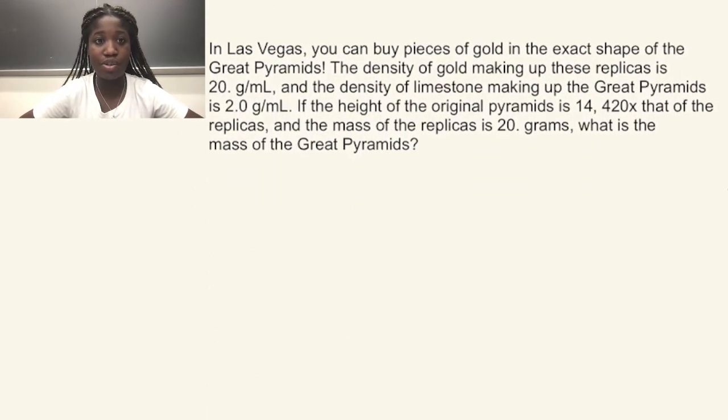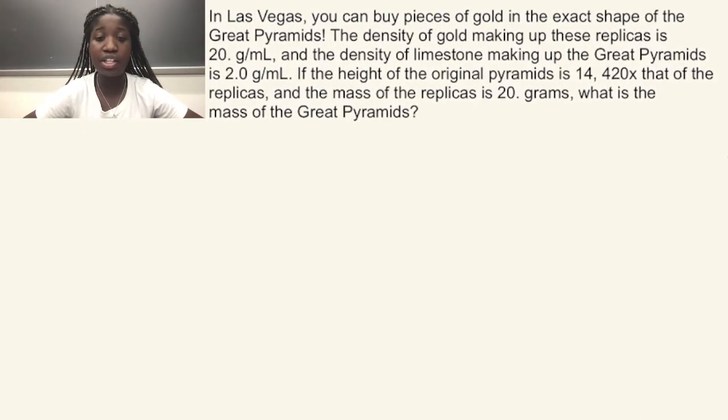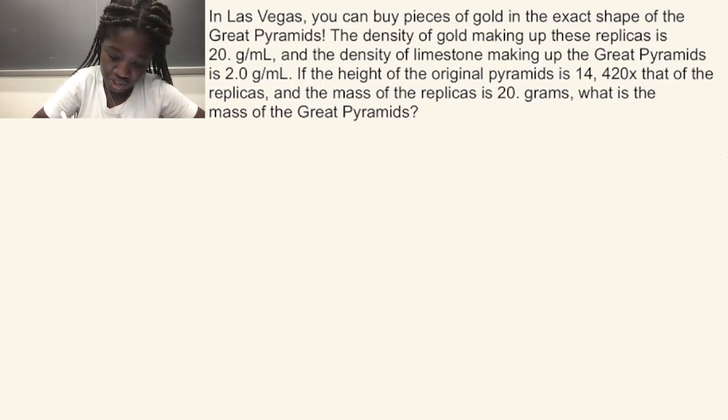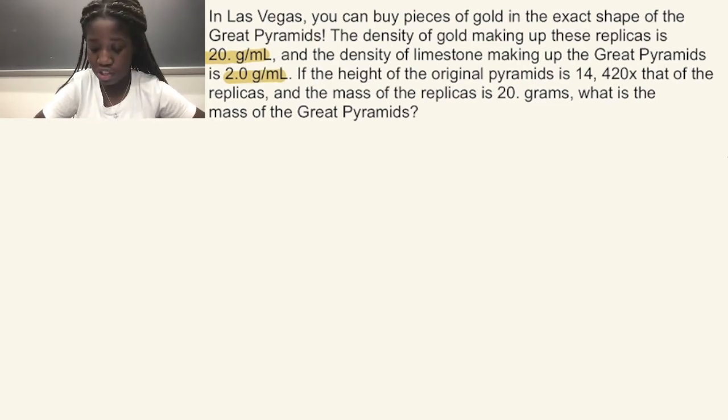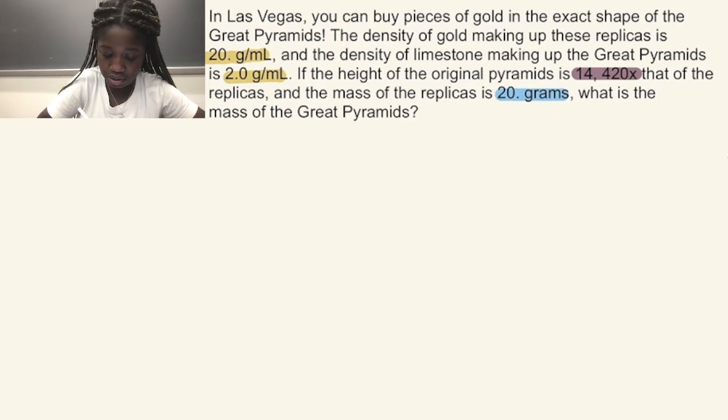This is the problem found in your pre-Tuesday workshop and I'll be highlighting the important information as I read. In Las Vegas you can buy pieces of gold in the exact shape of the Great Pyramids. The density of gold making up these replicas is 20 grams per milliliter and the density of the limestone making up the Great Pyramids is 2 grams per milliliter. If the height of the original pyramids is 14,420 times that of the replicas and the mass of said replicas is 20 grams, what is the mass of the Great Pyramids?